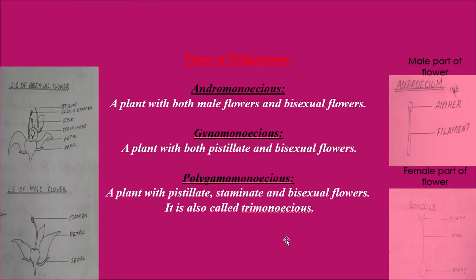Types of polygamous plants. First is andromonoecious: a plant with both male flowers and bisexual flowers. That means a plant bearing the androecium alone as a single flower, and also bearing both androecium and gynoecium together in a bisexual flower. If male flowers and bisexual flowers are present in a single plant, then that plant is referred to as andromonoecious.